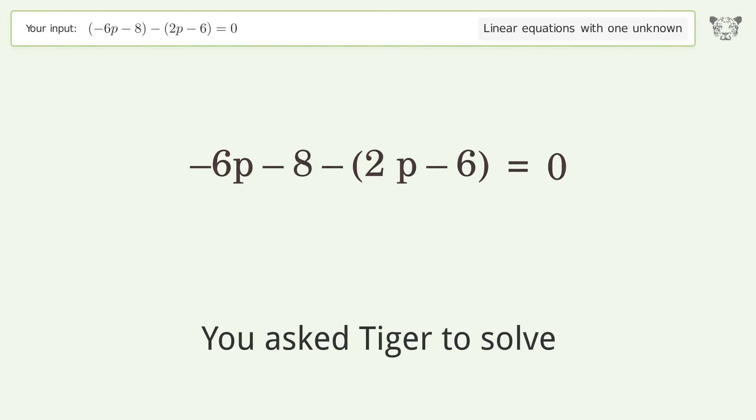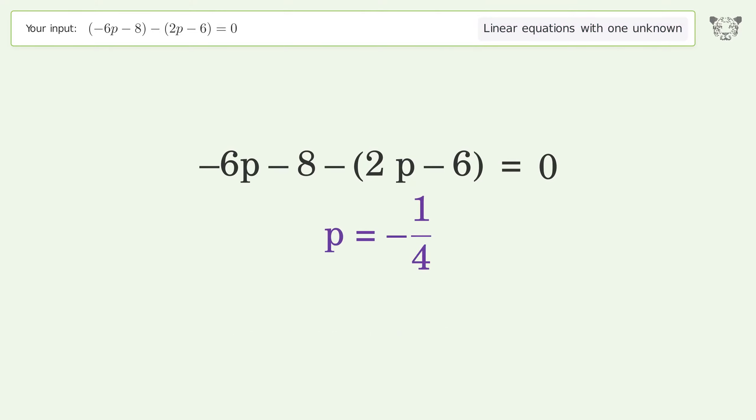You asked Tiger to solve this linear equation with one unknown. The final result is p equals negative 1 over 4.